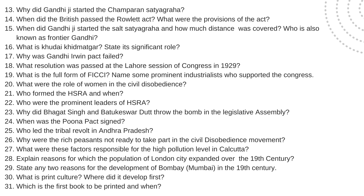Why did Gandhiji start the temple entry Satyagraha? Where and when did the British pass the Rowlatt Act, and what were the provisions of the act? When did Gandhiji start the Salt Satyagraha, how much distance was covered, and why is it also known as the Dandi March? Who is also known as the Frontier Gandhi? Why was the Gandhi-Irwin Pact signed? What resolution was passed in the Lahore session of Congress in 1929?